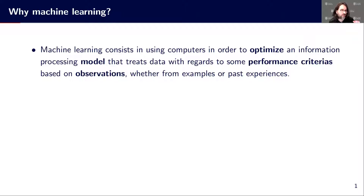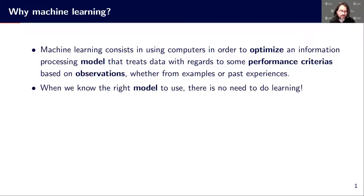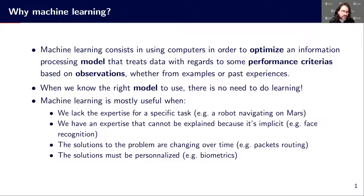For example, the training data set can be another type of observations we have. So this can be examples, this can be past experiences. The point with machine learning is that we don't know exactly what model we should use, but we have something to support optimizing and learning a model to do the task. Because if we have the model, there's no need for learning. So machine learning is mostly useful when we don't have specific expertise for doing a given task.